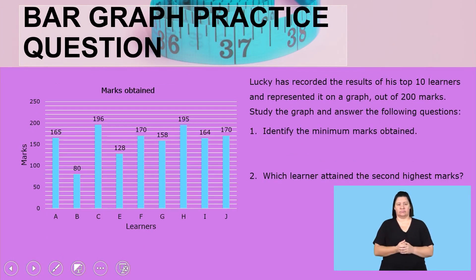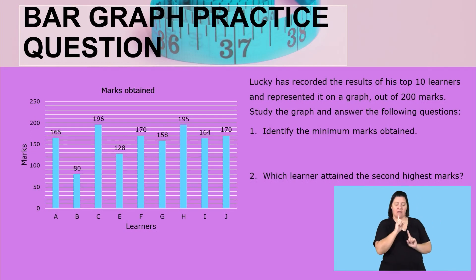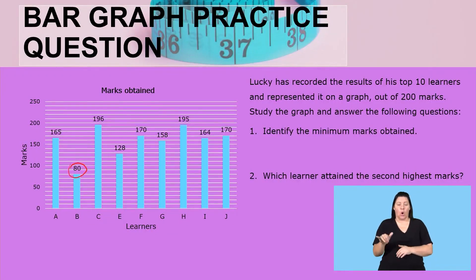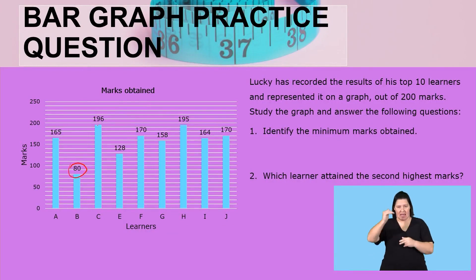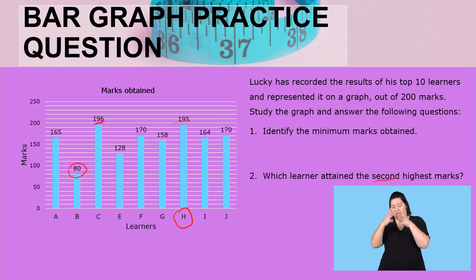Now let us get some practice. A teacher recorded the results of his top 10 learners, represented on a graph out of 200 marks. Study the graph and answer the following questions. Identify the minimum marks obtained — with this graph the values are given, so the minimum mark obtained is 18. Which learner attained the second highest marks? The highest mark is 196, the second highest is 195, so the learner who got the second highest is learner H.